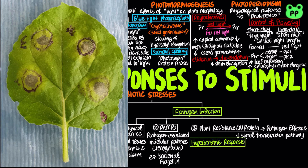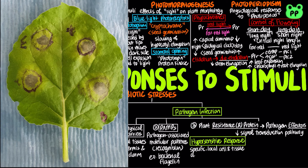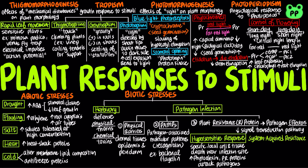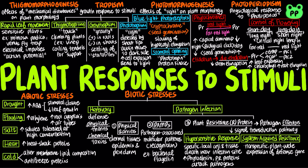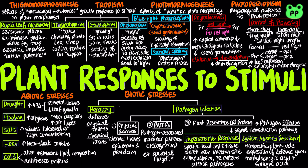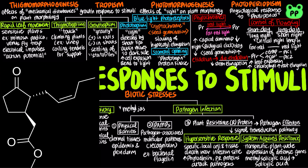The hypersensitive response refers to local cell and tissue death that occurs at and near the infection site. Plants produce phytoalexins and PR proteins, which attack the pathogen. On the other hand, systemic acquired resistance refers to plant-wide expression of defense genes. It is a non-specific immune response against a diversity of pathogens, which can last for a few days. It is triggered by the conversion of methyl salicylic acid to salicylic acid, which in turn activates the signal transduction pathway that increases the production of molecules that help protect the plant. The compound methyl jasmonic acid, derived from the hormone jasmonate, also plays an important role in the signal transduction pathway against herbivory and pathogen infection.